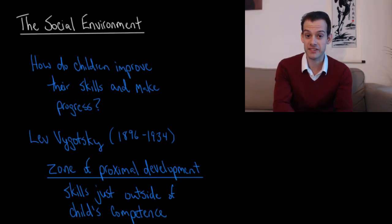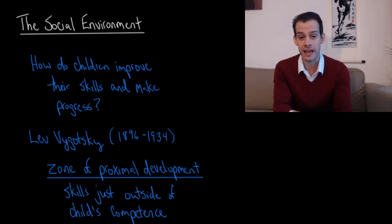Hi, I'm Michael Corayer and this is Psych Exam Review. In the past few videos we've been looking at Piaget's theory of cognitive development along with some related topics, and we've been thinking about the skills and abilities that children develop over time as they progress through these stages. But what we haven't really addressed is how it is that children make this improvement. How is it that they acquire particular skills or how is it that they stop making particular types of errors? And this brings us to consider the role of the social environment in shaping development.